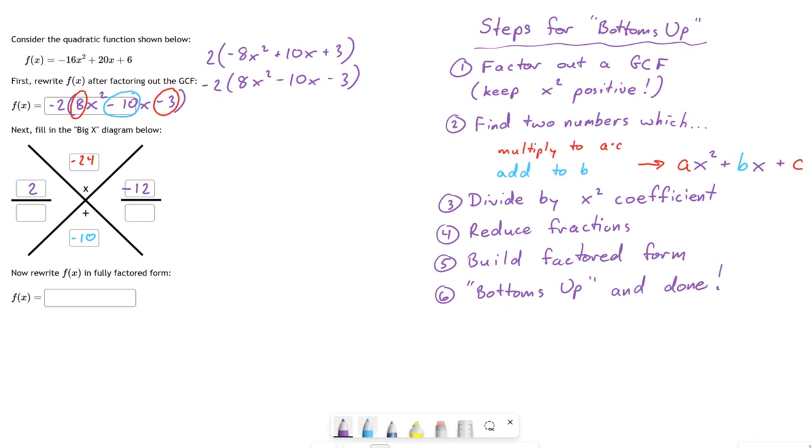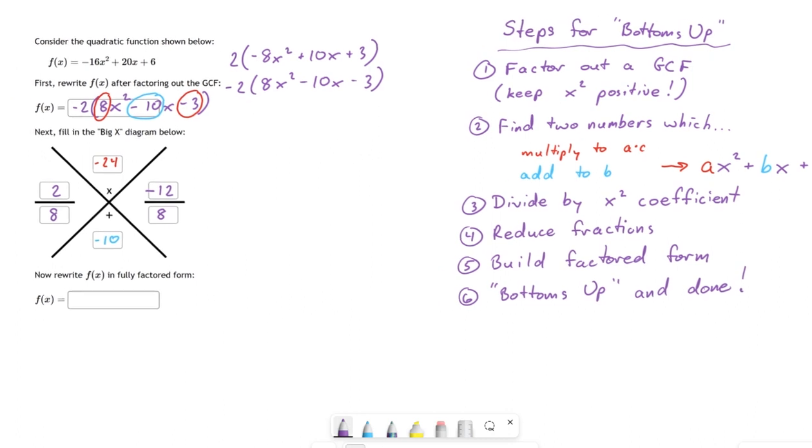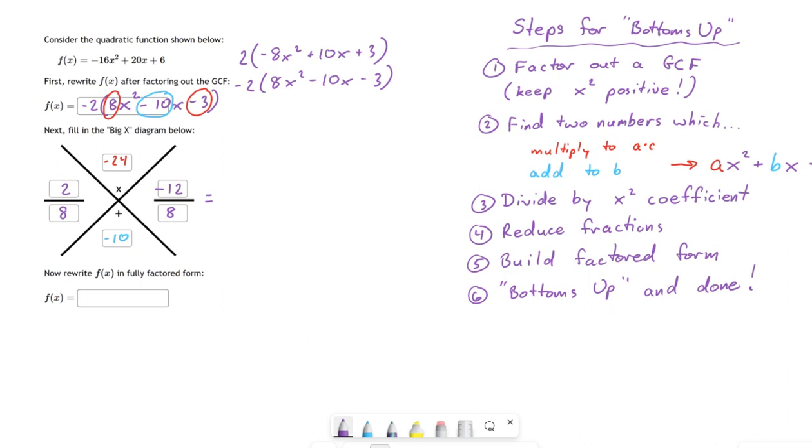Now the next step, and keep in mind where we are here in this procedure, the next step says divide by the x² coefficient. Well, that's the 8. So I'm going to divide by 8. And now what I'm going to do is reduce the fractions. So this -12 over 8, well, that's really just -3 over 2. And my 2 over 8, that's really just 1 over 4.